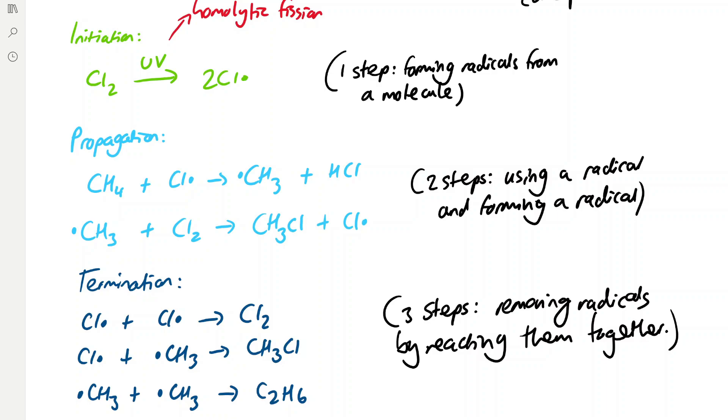So in propagation there are two steps and we're using a radical and forming a radical in each step. For example, in the first step we're using the chloride radical and we're forming the CH3 radical.